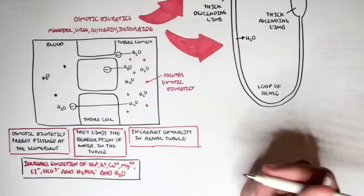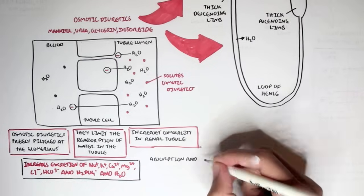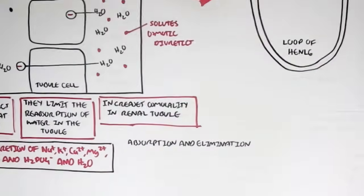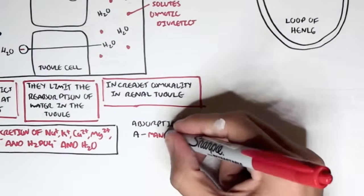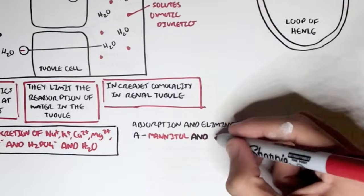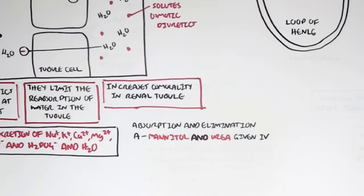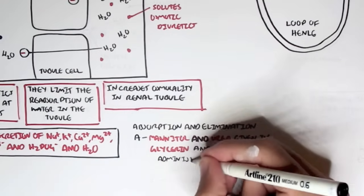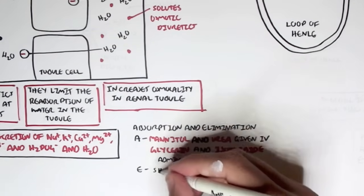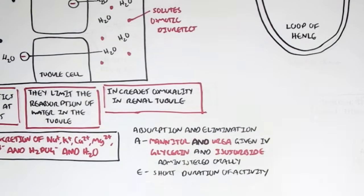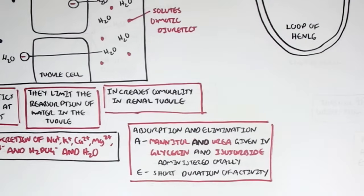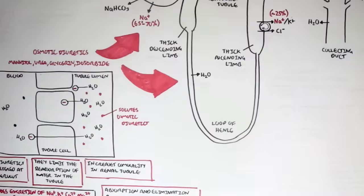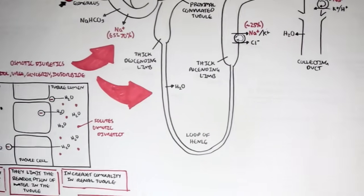Regarding absorption and elimination of osmotic diuretics: mannitol and urea are given intravenously, while glycerin and isosorbide are administered orally — IV administration gives a quicker response. They have a short duration of activity, are quickly metabolized, and are excreted through the urine.